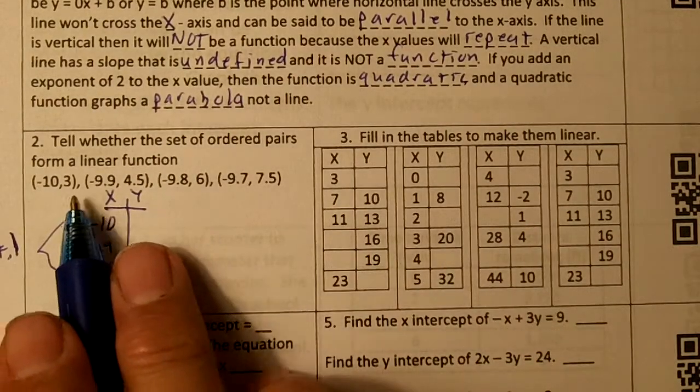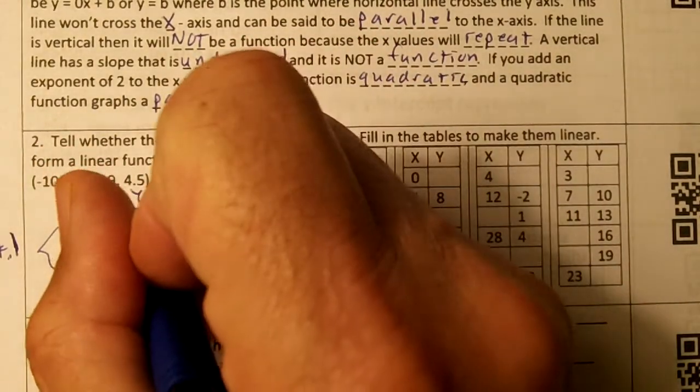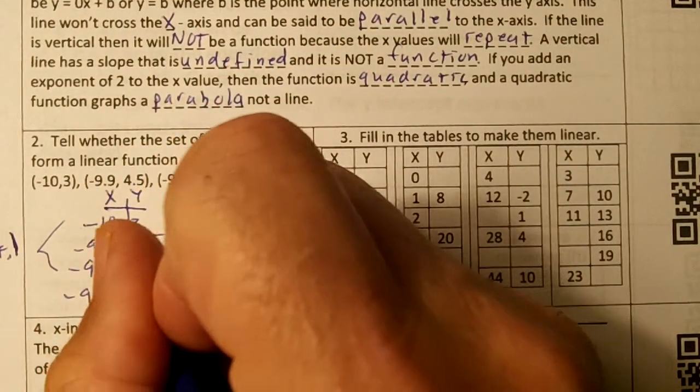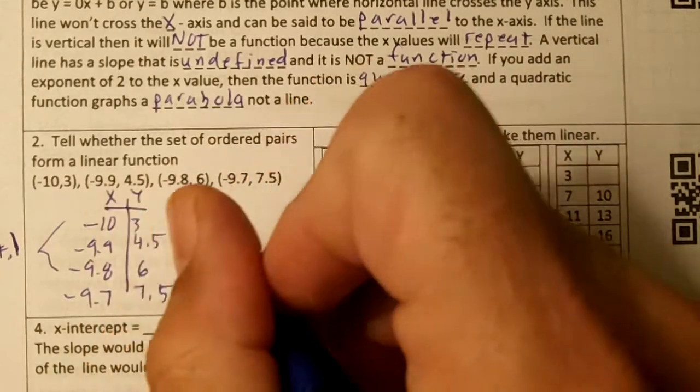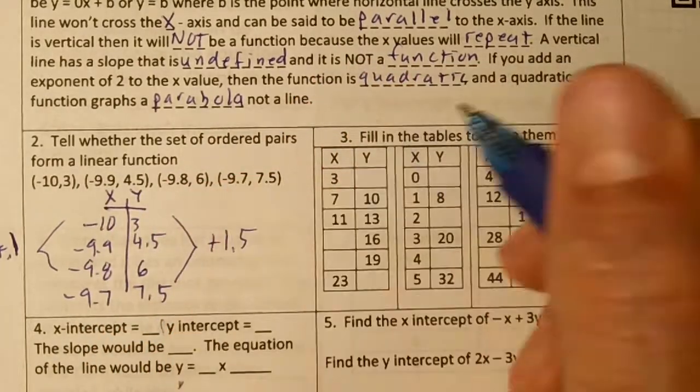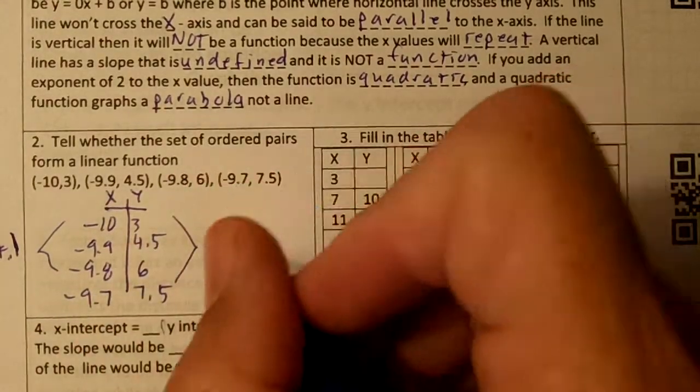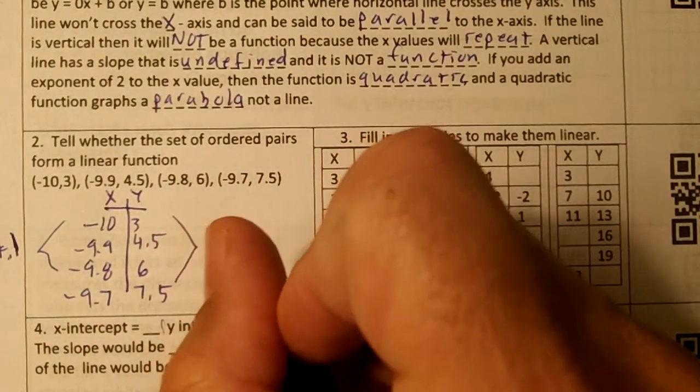Our y values are 3, 4.5, 6, and 7.5. Those values are also increasing, but by 1.5. Since both x and y have a constant rate of change, it forms a linear function.